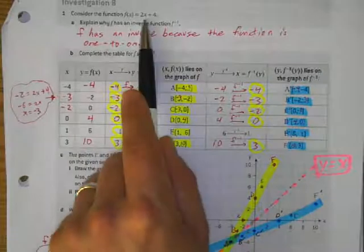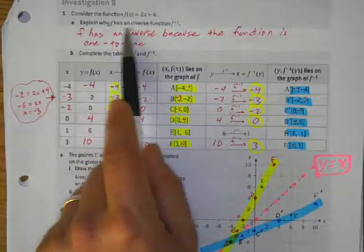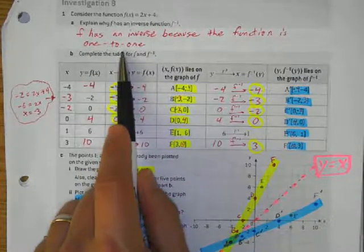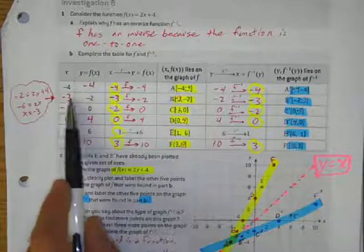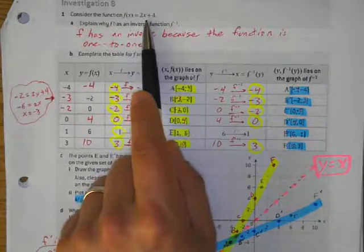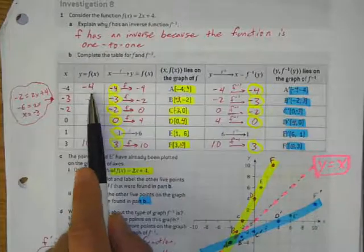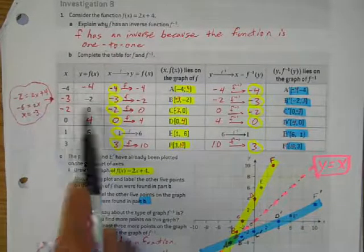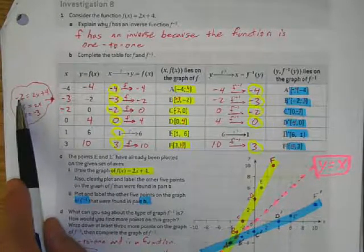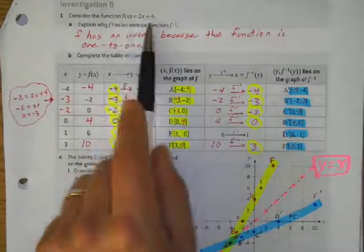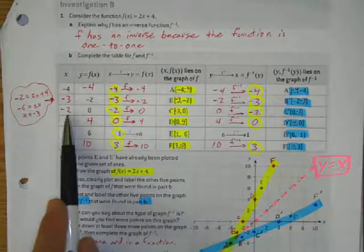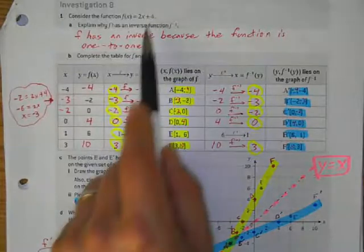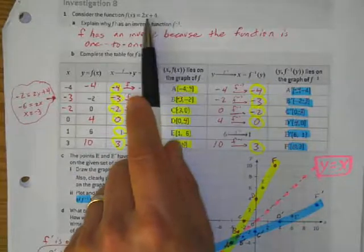Looking at f(x) = 2x + 4: the slope is not 0, so for every x value I plug in I get a 1-to-1 output. Plugging in negative 4 gives 2(−4) + 4 = −4. If y is 2, I solve for x and get negative 3. If y is 0, then 0 = 2x + 4, so x = −2. Plugging in x = 0 gives 4; x = 1 gives 6; x = 3 gives 2(3) + 4 = 10.